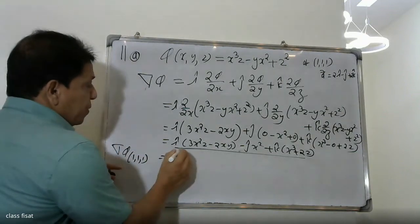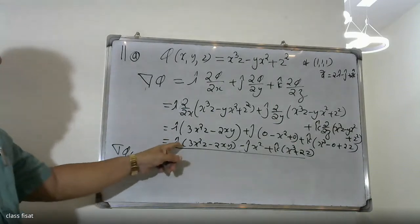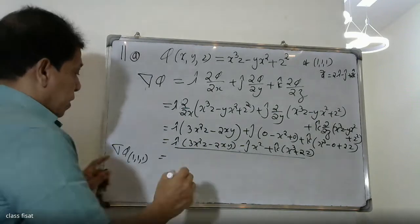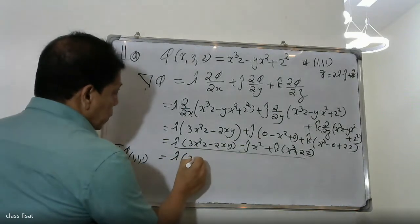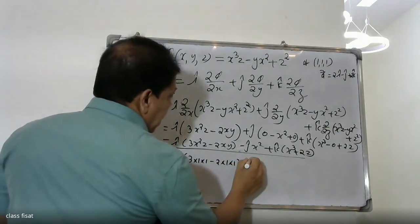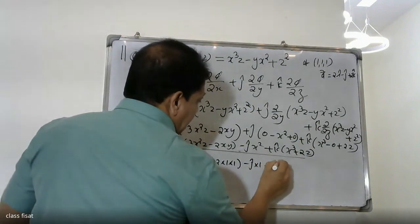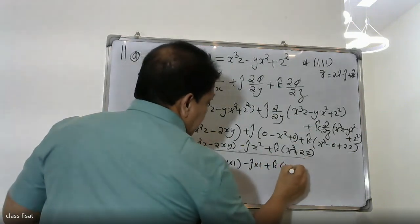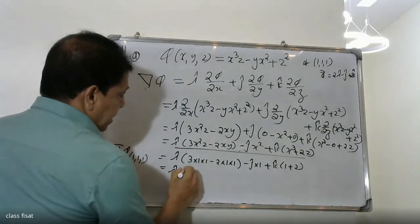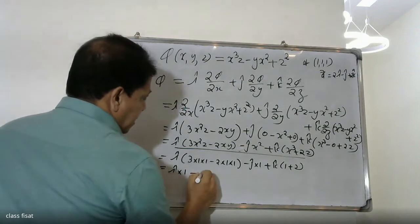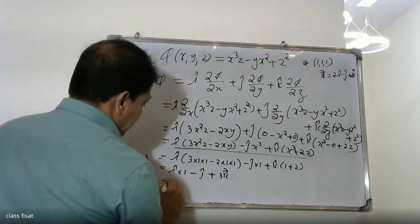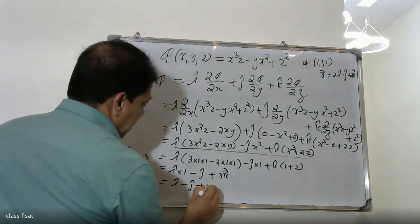Substituting the point (1,1,1): i(3·1 - 2·1·1) - j(1) + k(1 + 2). Simplifying: del φ = i(3 - 2) - j + 3k = i - j + 3k.